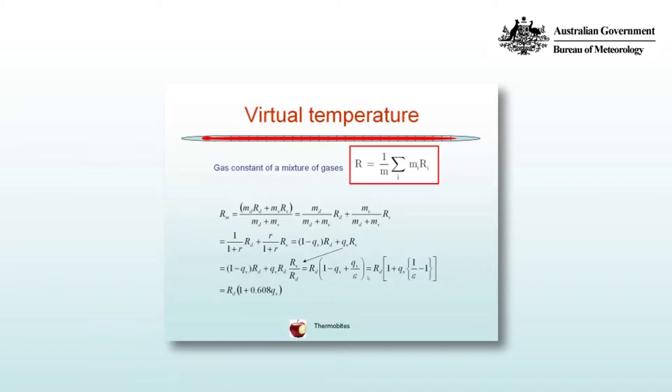Now given the value that we know of epsilon, we can finally write that the specific gas constant for moist air is equal to the specific gas constant for dry air multiplied by a term involving the specific humidity.